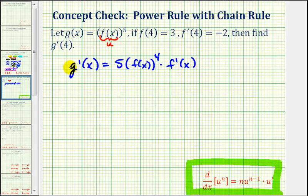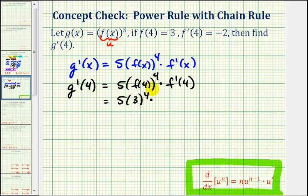So if we want to find g prime of four, we'll substitute four for x. Well, f of four is equal to three, so we'd have five times three to the fourth times f prime of four, which is equal to negative two.